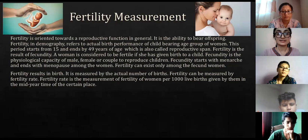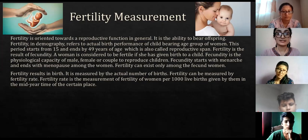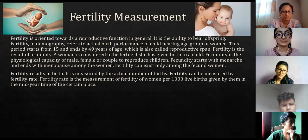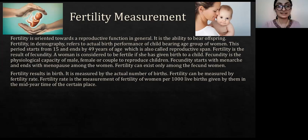Fecundity is the physiological capacity of male, female, or couple to reproduce children. Fecundity starts with menarche and ends with menopause among women. Fertility can exist only among the fecund women. Fertility results in birth and is measured by the actual number of births. Fertility can be measured by fertility rate.